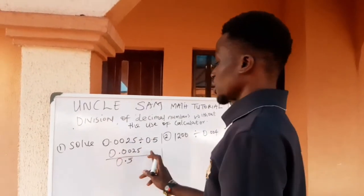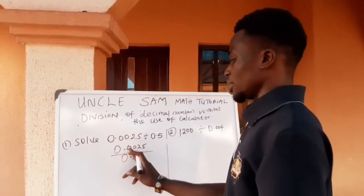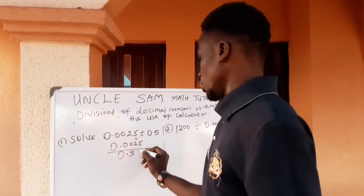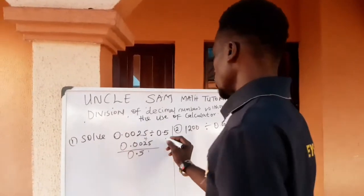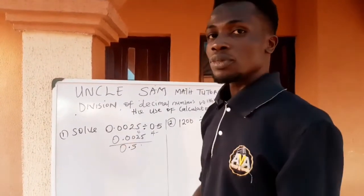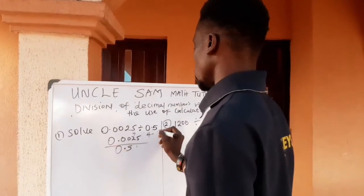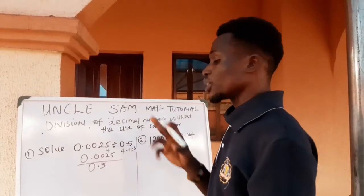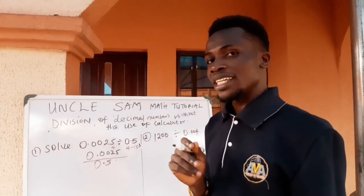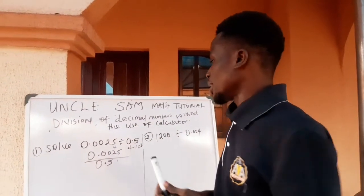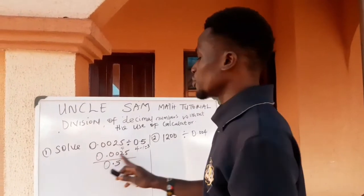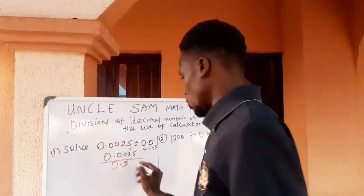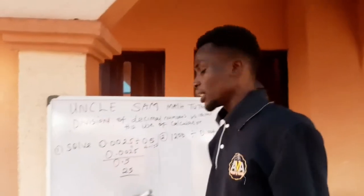Count the number of decimal places for the numerator and the denominator, then subtract. After the point in the numerator, how many numbers can I see? 1, 2, 3, 4. So the numerator has 4 decimal places. And after the point in the denominator, how many numbers can I see? 1. So the denominator has 1 decimal place. Now I'm going to subtract them: 4 minus 1 gives me 3. Once I subtract, I remove the decimal point — I'm left with 25 for the numerator and 5 for the denominator.